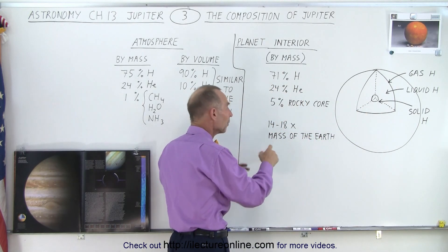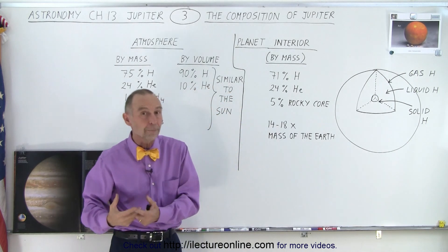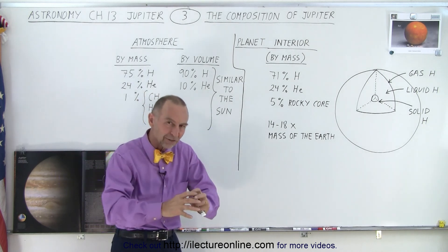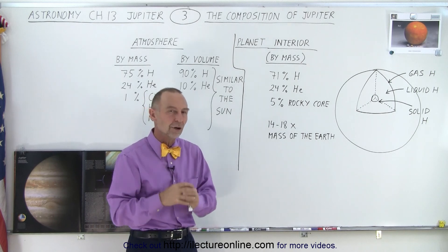Which makes the core about 14 to 18 times the size in mass compared to the Earth. 14 to 18 Earths compressed in the form of rocky material at the very center of Jupiter.